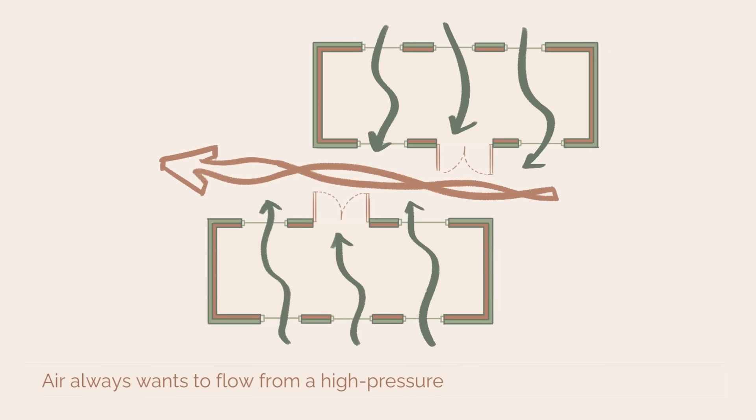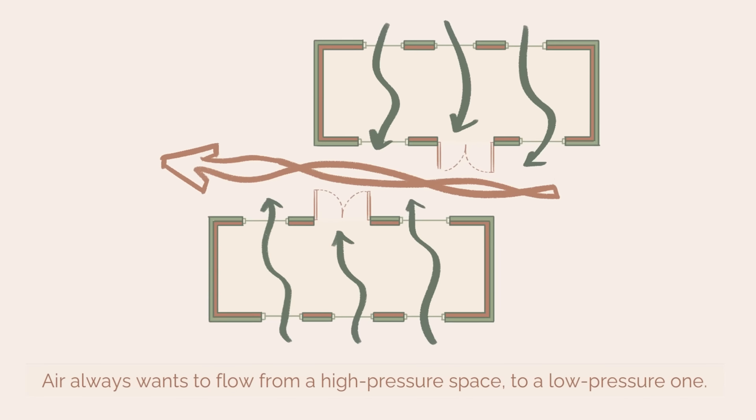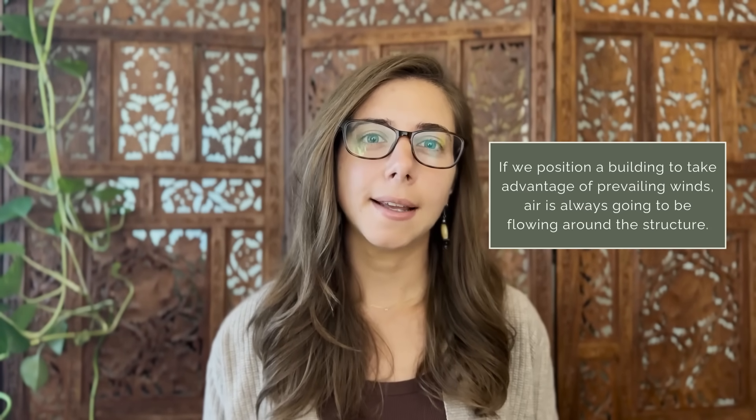Cooler air stays lower in a high pressure zone. High pressure zones can also occur because of forces like wind. If the wind blows on one side of the building, it creates a high pressure zone on that side, and on the other side a low pressure zone is automatically formed. Air always wants to flow from a high pressure space to a low pressure one. So if we position a building to take advantage of prevailing winds, air is always going to be flowing around the structure.